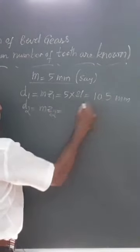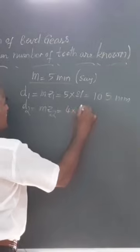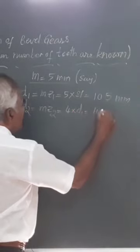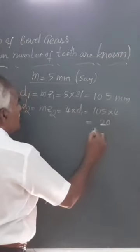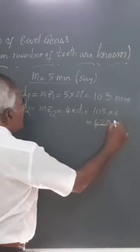Because the transmission ratio is 4, 4 into d1, that is 105 into 4, that works out to 420 millimeter.